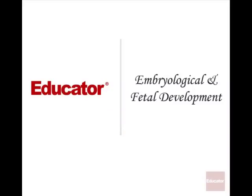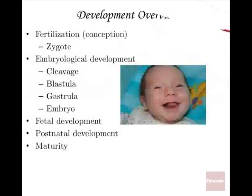Welcome back to educator.com. This is the lesson on embryological and fetal development. An overview of development from conception up to adulthood starts with fertilization — that is the moment of conception. When sperm fuses with egg, you get what's called a zygote, that's the first cell of life.